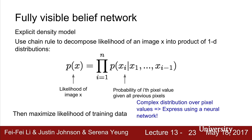The distribution P(X_i | all previous pixel values) is really complex. Neural networks are a good way to express such complex transformations, so we'll use a neural network to express this distribution. We also have to define an ordering for the pixels—what does 'all previous pixels' mean?